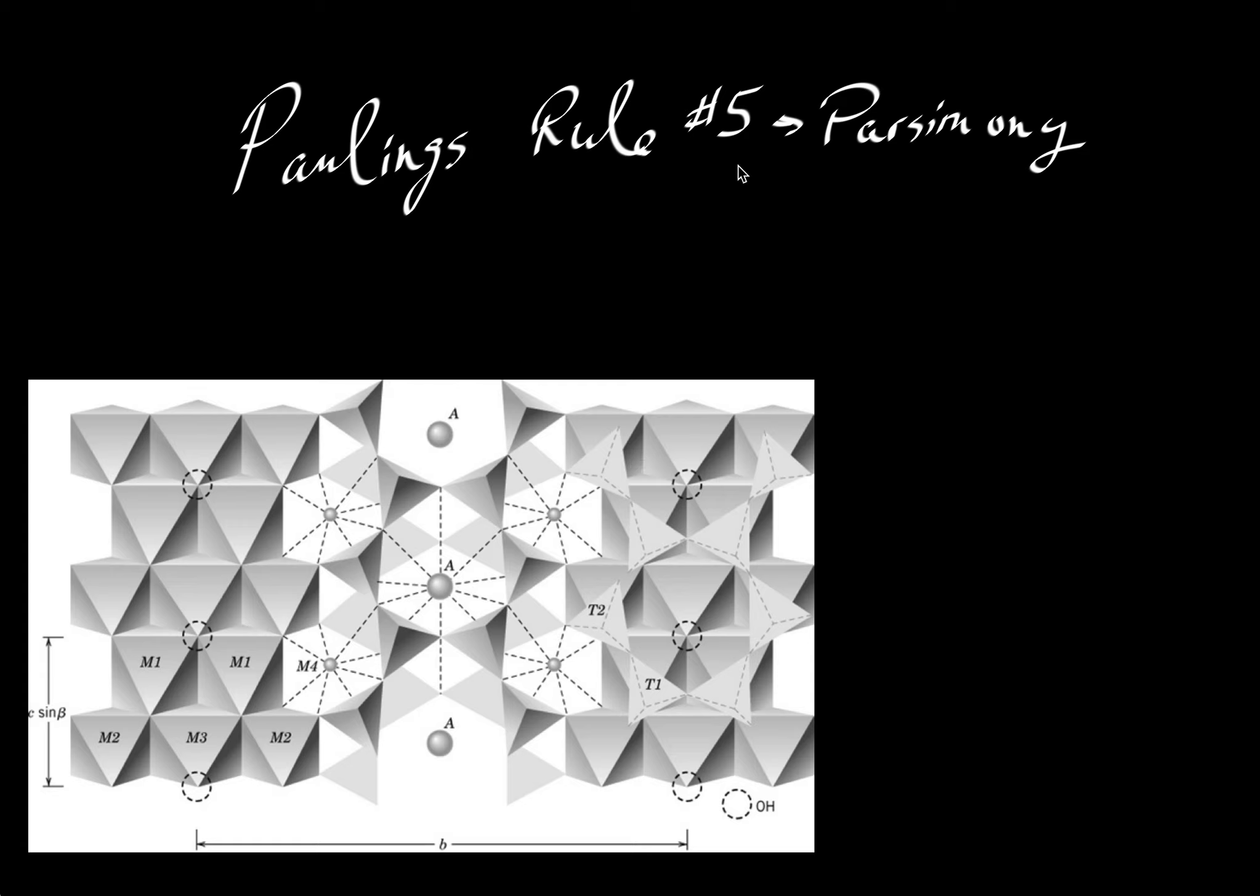So here we're going to take a look at Pauling's rule number five, the rule of parsimony. And this is an interesting word choice. Parsimonious means to be stingy. So it's in a sense Pauling's rule of stinginess. And we'll see that what he means by this is that crystals are stingy about how they arrange themselves into various units of polyhedral elements.